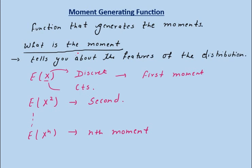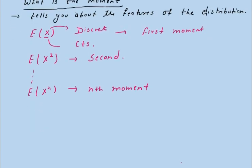So in this way we can generate the moments with the help of the moment generating function. The moment generating function is defined as M_X(t), where X is the random variable and t is a helper variable. The moment generating function of X is given by E[e^(tX)], where e is the exponential function.